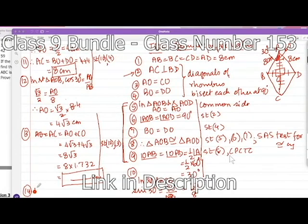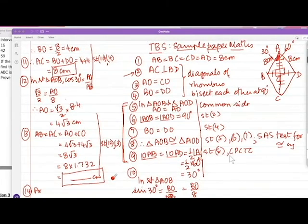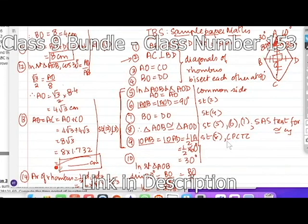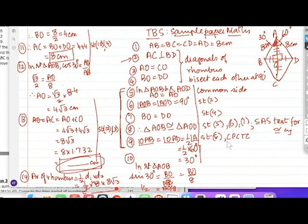The question also asks for the area of the rhombus. Area of rhombus = half × D1 × D2. So that is half × 8 × 8 root 3. Two goes into 8 four times, so that gives 4 × 8 root 3 = 32 root 3 square centimeters. That's 4 marks — done. Finish taking it down.